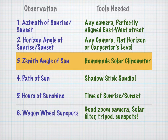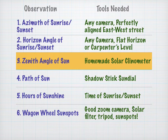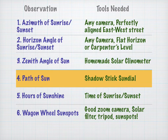Next is one of my favorites, the zenith angle of the Sun — measuring how high the Sun is in the sky at its highest point, or solar noon. To do this, you'll need a homemade solar clinometer made from a simple plastic protractor.